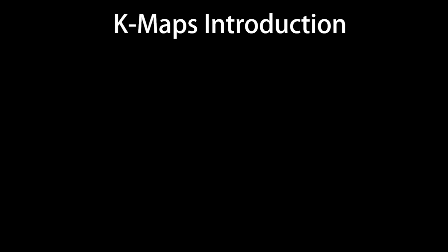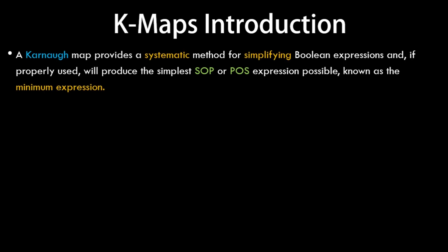A K-map or Karnaugh map provides a systematic method for simplifying Boolean expressions. Till now we've been simplifying Boolean expressions using different Boolean algebraic laws and techniques, but this is an alternative technique, and if properly used, it will produce the simplest SOP or POS expression possible, known as the minimum expression.